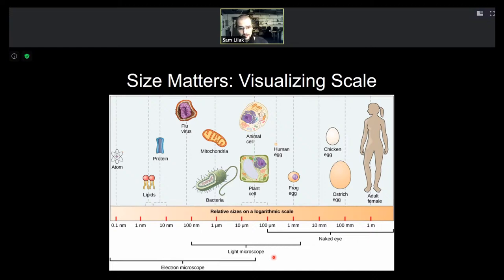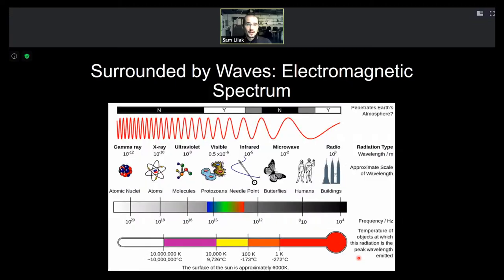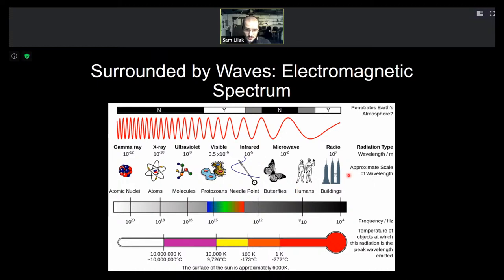To understand why a light microscope falls off at a certain point, we need to understand that we are surrounded by waves — the electromagnetic spectrum. The visible spectrum that we can actually see is an incredibly narrow range of about 350 nanometers. There are many other forms of electromagnetic radiation: microwaves are on the scale of about one hundredth of a meter, radio waves go up to the scale of kilometers in wavelength, and ultraviolet light and X-rays are more damaging forms.